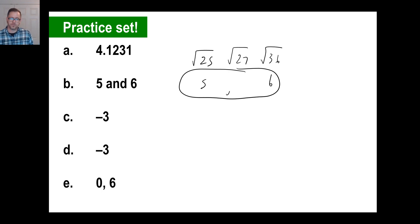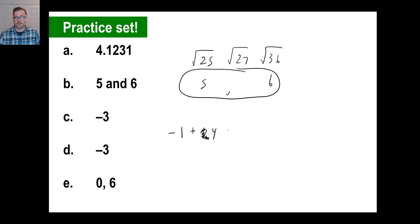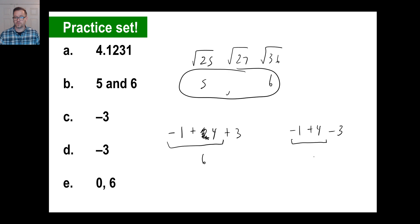E should give two answers: 0 and 6. The opposite of 1 squared is negative 1, plus 4, plus or minus the square root of 9 which is 3. First answer: negative 1 + 4 + 3 = 6. Second answer: negative 1 + 4 − 3 = 0. There's your 0 and your 6.